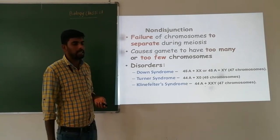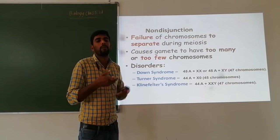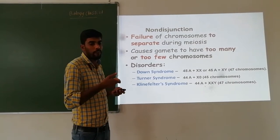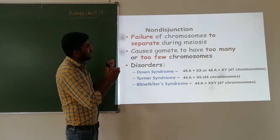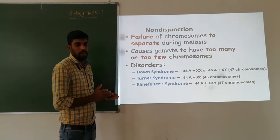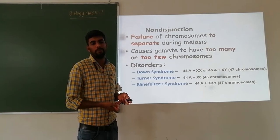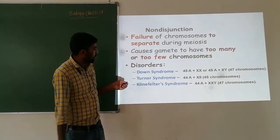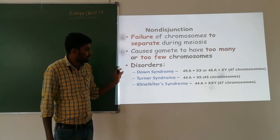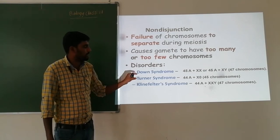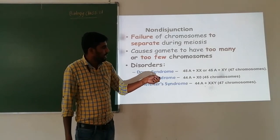Non-disjunction means the chromosome number will vary due to the failure of chromosomes to separate during meiosis, causing an increase or decrease in chromosome number. Examples of resulting disorders include Down syndrome, Turner syndrome, and Klinefelter syndrome.